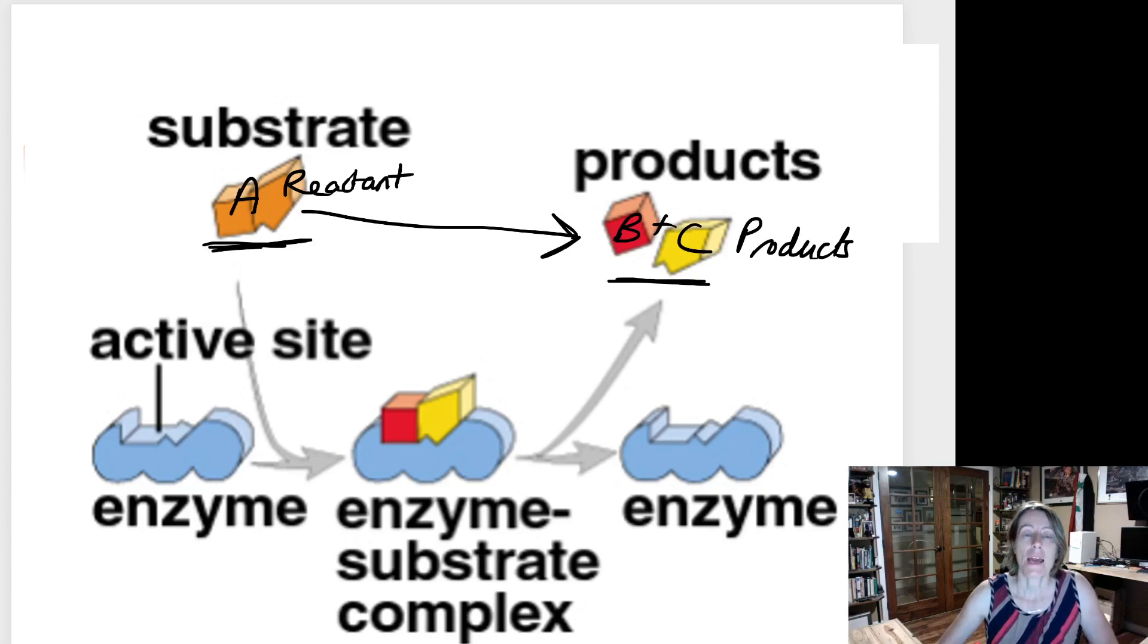If this reaction is happening in a living cell, chances are it's going to be helped by an enzyme. That enzyme is going to make the reaction go more easily by lowering the activation energy. Let's talk about how the enzyme actually does that.